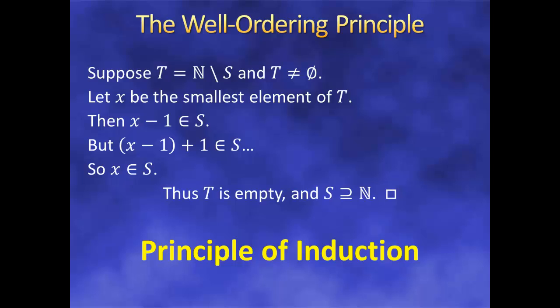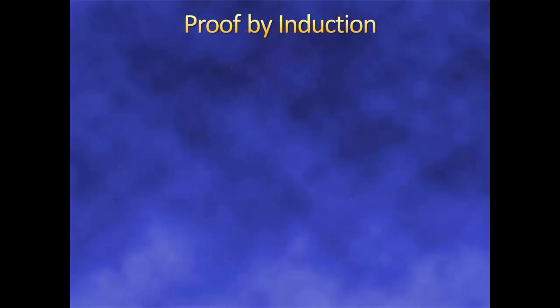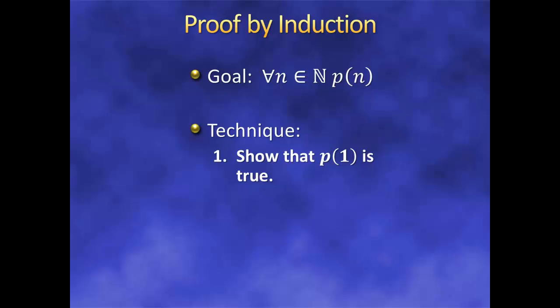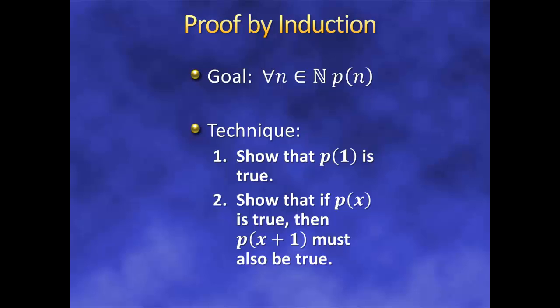This is called the principle of induction. With this property of the natural numbers, we can explore a rather simple but surprisingly powerful kind of proof: proof by induction. Suppose we've got a statement of the form: for all n ∈ ℕ, p(n) is true. In other words, we want to show that the truth set of p(n) contains the natural numbers. Using the principle of induction, we can do exactly that if we show two things: first, we have to show that p(1) is true; and second, we have to show that if p(x) is true for some x, then p(x+1) must be true as well. Once we've shown those two conditions, it's guaranteed that p(n) is true for all natural numbers.